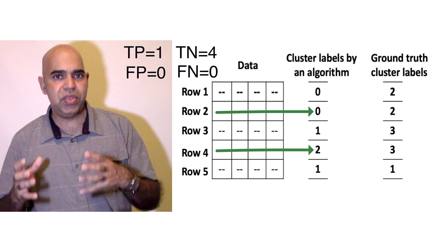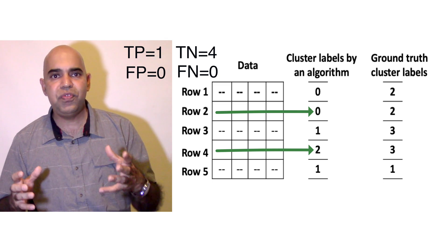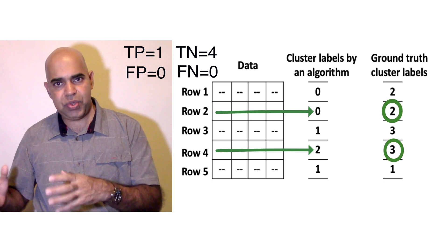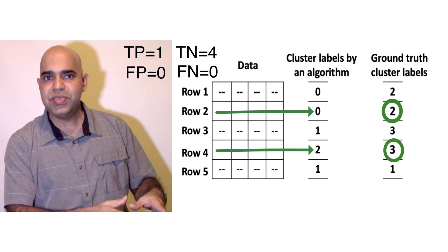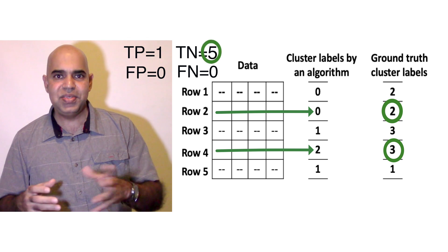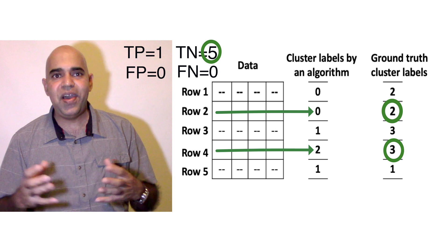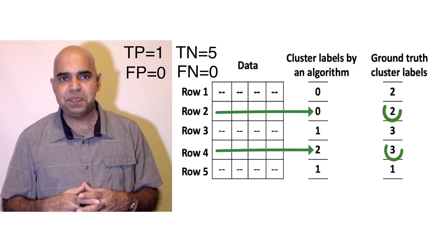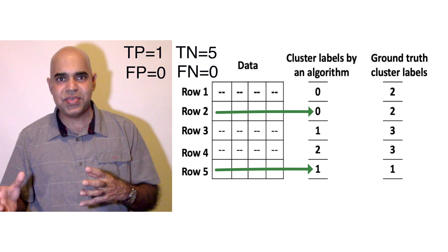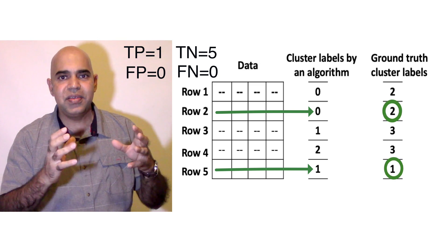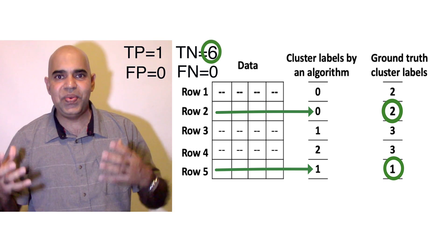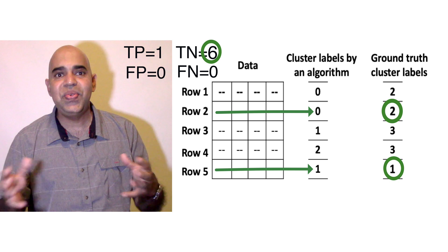The second and fourth rows are from two different algorithmic clusters and are considered negative. They are from two different ground truth clusters as well. Hence, we have another true negative — five so far. The second and fifth rows are also from two different algorithmic clusters and two different ground truth clusters. Hence, we have another true negative — six true negative pairs so far.